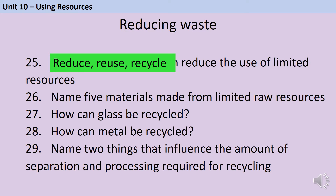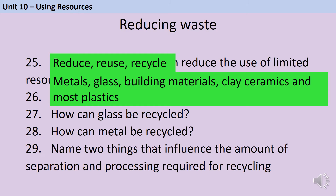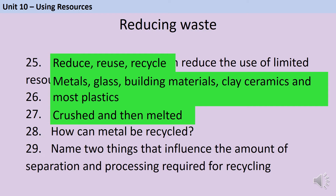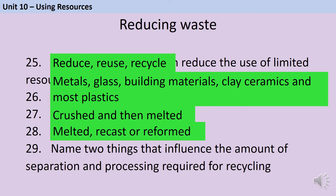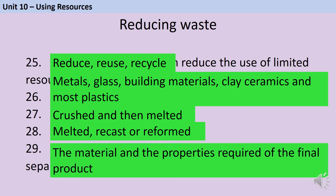The five materials listed in the specification are metals, glass, building materials, clay ceramics and most plastics. To recycle glass, we crush it and then melt it, whereas metals get melted and then either recast or reformed. Two things that influence the amount of separation and processing required for recycling are the material being used and the properties required of the final product. For instance, if recycling plastic for something not on show, colour won't matter, but for making milk bottles, only clear or white plastic can be used — any green plastic mixed in would result in a slightly green milk bottle that nobody would buy.